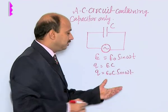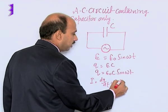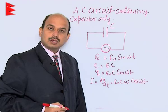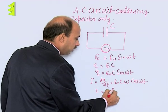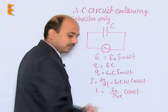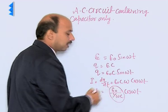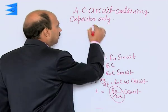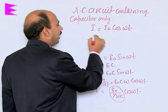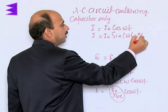We can get the current by differentiating Q with respect to t. So dQ/dt = E₀C × ω cos(ωt). We can write I = E₀ / (1/ωC) × cos(ωt), where 1/ωC acts as resistance. The peak current is I₀, so I = I₀ cos(ωt), which can also be written as I = I₀ sin(ωt + π/2).